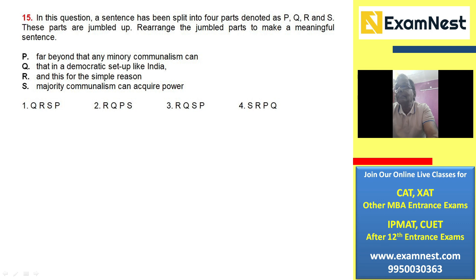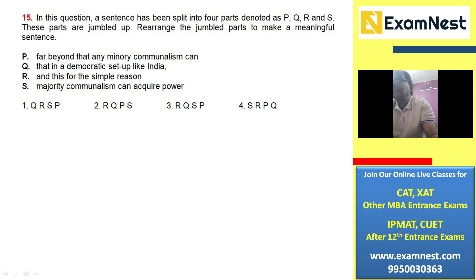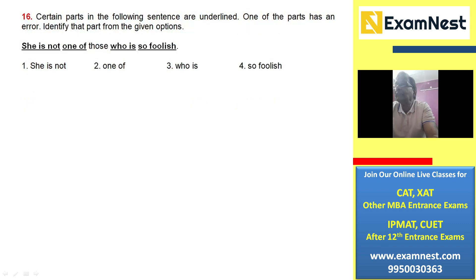Look at R — this is for the simple reason that in a democratic setup like India, majority communalism can acquire power far beyond that any minority communalism can. You have just got to try the various combinations and see where you can make the proper sequence. The correct answer is number three.